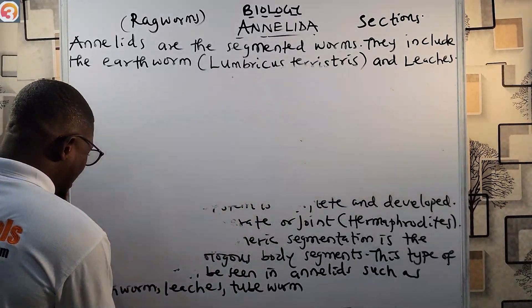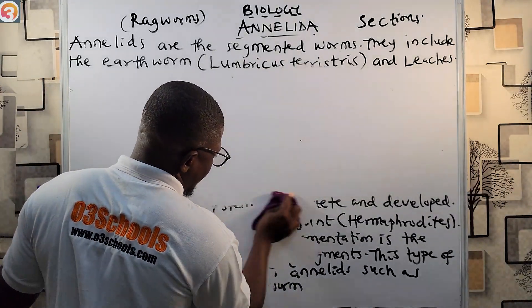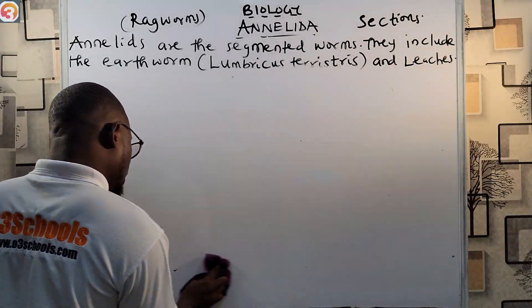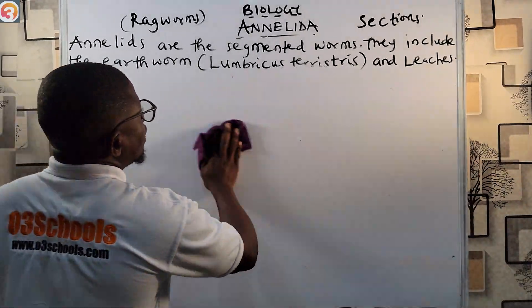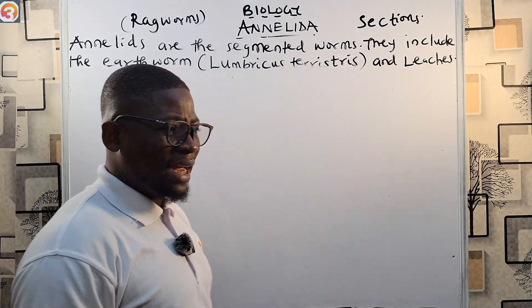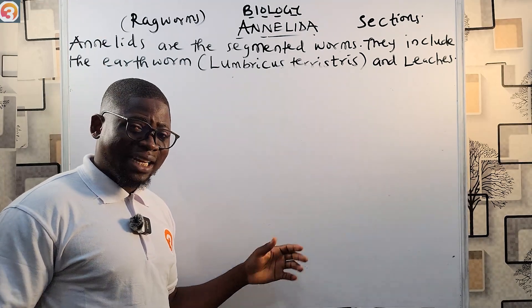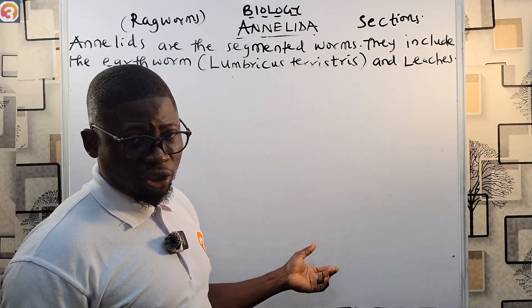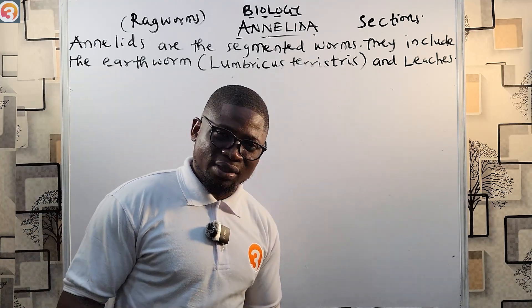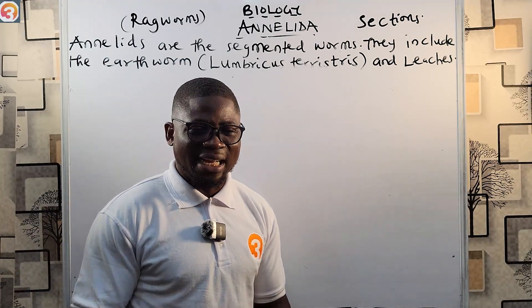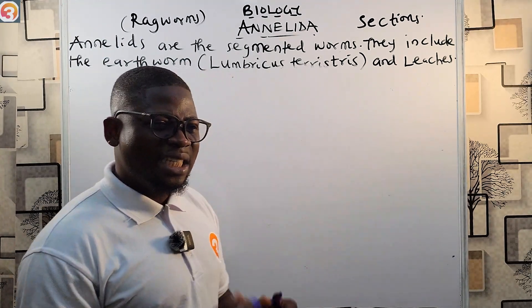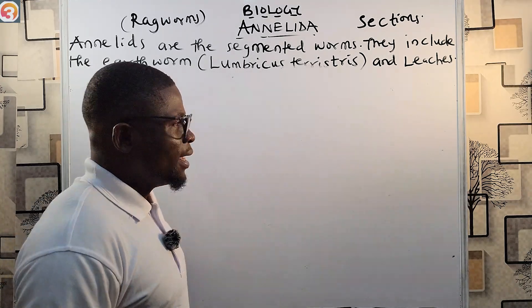Tubeworm is not metamerically segmented — take note of that. Metameric segmentation is found in annelids such as earthworm and leeches, and in higher species like arthropods and chordates, but it is NOT found in tapeworms.